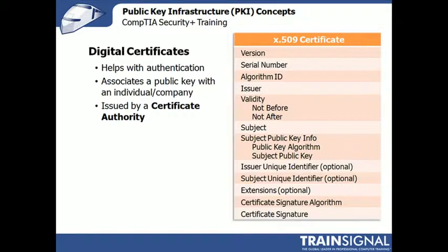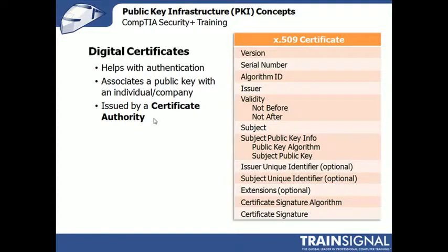Digital certificates associate a particular public key with an individual, a company, an organization — whoever it is that owns that public key. Digital certificates are issued by a certificate authority. A common certificate standard is x.509, and it contains fields like when a cert is valid — not before this date, not after this date — what algorithm is used for encryption, what the public key is, and the issuer, which is that certificate authority.